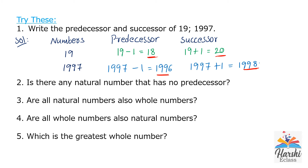Question 2: Is there any natural number that has no predecessor? Yes — it is 1, because natural numbers start from 1. Before 1 there are no numbers, so the natural number 1 has no predecessor.